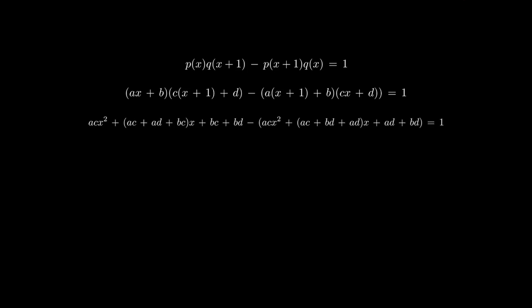At last, we will have bc - ad equals 1. So we have come to a conclusion, which is that p and q have degree at most 1, but bc - ad must equal to 1. This is our final answer.